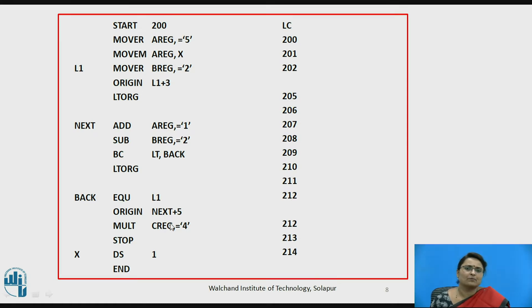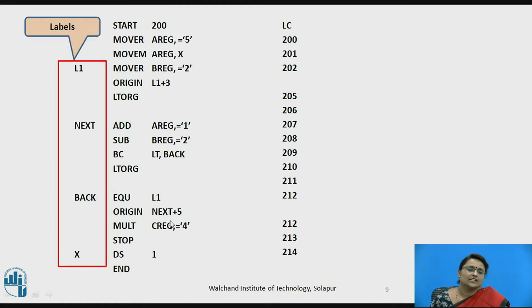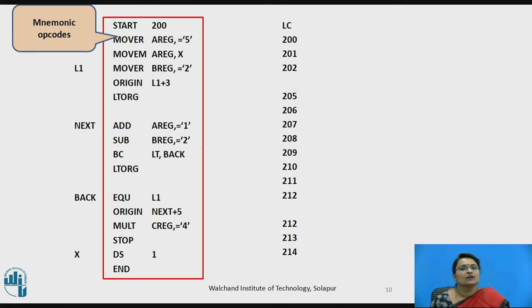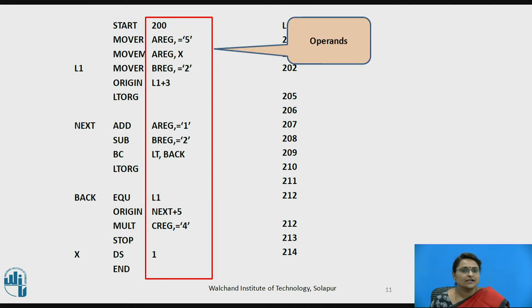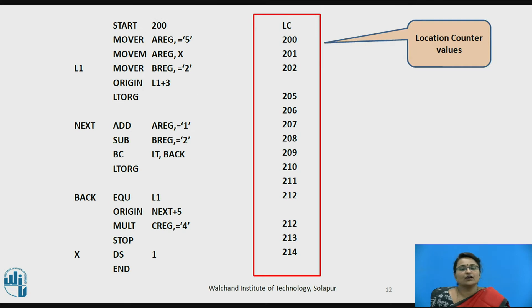Consider this example. The program has labels L1, NEXT, BACK, and X. It has mnemonic opcodes such as MOVE R, MOVE M, and assembler directives like ORIGIN and LTORG. The operands are taken as operand 1 and operand 2 — two operands are used — and finally all the location counter values are specified.